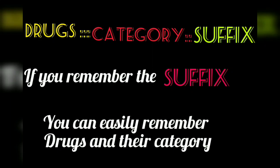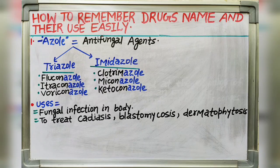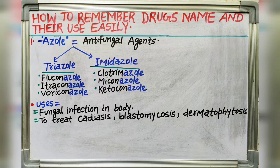First suffix is -azole. It indicates antifungal agents. Azole has two categories: triazole derivatives and imidazole derivatives. Triazole derivative drugs include fluconazole, itraconazole, voriconazole; and imidazole derivative drugs include clotrimazole, miconazole, ketoconazole. These drugs belong to antifungal agents and are used as treatment of fungal infections in the body.